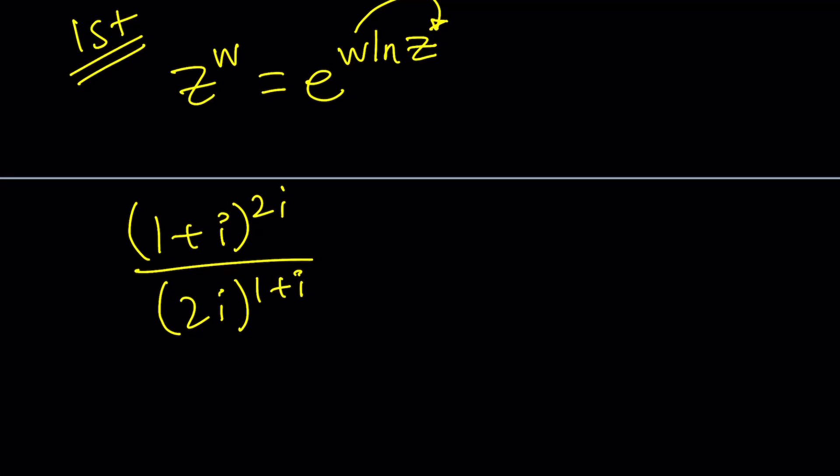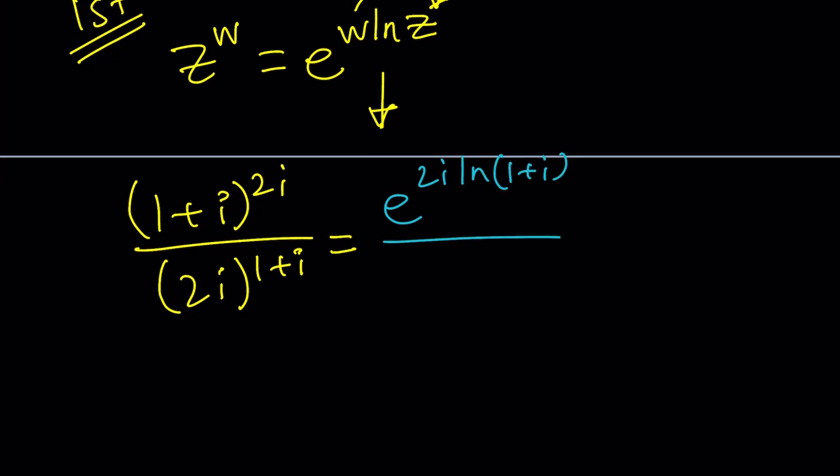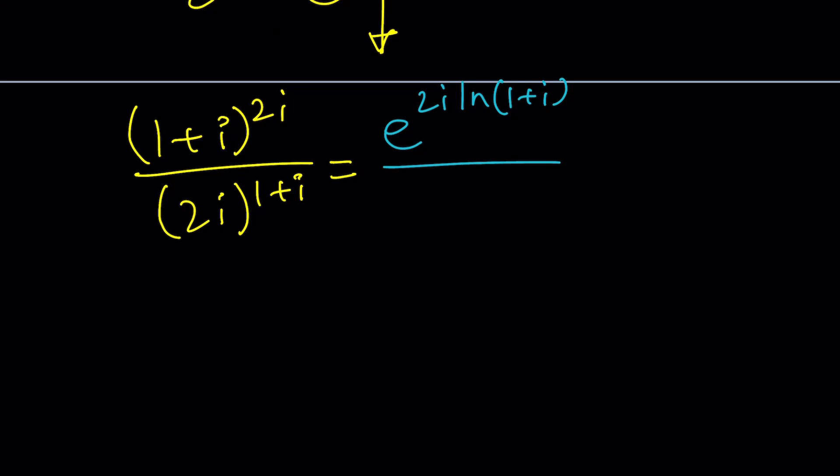By the way, have you noticed that the base and the exponent are switched around, but they are not just random. Let me not give it away at this point. If you know it, don't give it away either. So we're going to follow this definition. This is going to give us e to the power 2i times ln(1 plus i) and e to the power (1 plus i) times ln 2i. Get the idea?